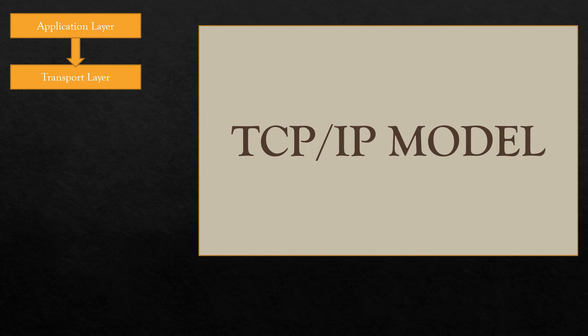The transport layer is the fourth layer of the TCP/IP model. It deals with data in the form of data segments and mainly performs segmentation of data received from the upper layers. It is responsible for transporting data and setting up communication between the application layer and the lower layers. This layer facilitates end-to-end communication, error-free delivery of data, and flow control by specifying data rates. It is used for process-to-process communication with the help of port numbers of the source and destination.